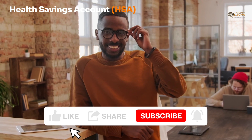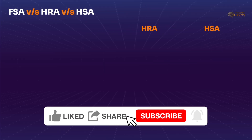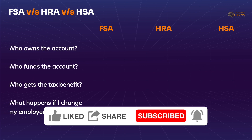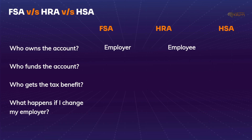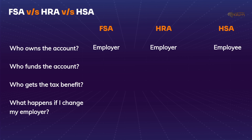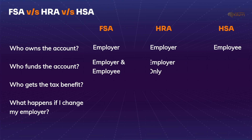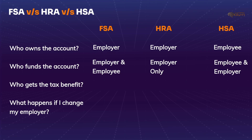Now, let's recap and break it down to easily differentiate between the three. Who owns the account? An FSA account is owned by the employer. The HRA account is also owned by the employer, whereas the HSA account is owned by the employee. Who funds the account? An FSA account is employee-funded, however the employer may also fund this account. An HRA account is solely funded by the employer only — employees cannot fund this account. An HSA account, on the other hand, is primarily funded by the employee, and the employer may also fund this account.